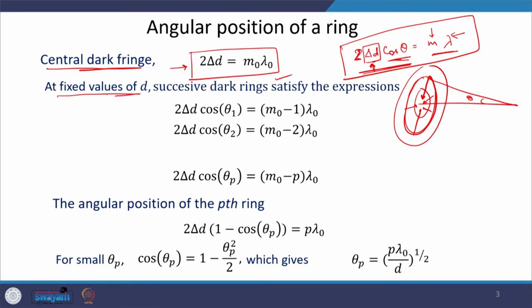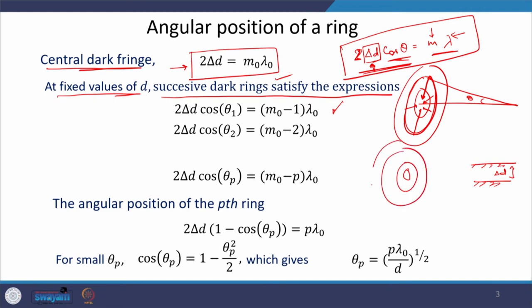Now suppose the separation between the two mirrors is fixed. For fixed δd, the successive dark rings satisfy a specific expression. We have fixed the separation between the two mirrors, and due to this separation a ring fringe pattern forms. We can assign angular positions to the different rings. If we vary θ and focus our attention on different rings, successive dark rings starting from the centre satisfy these criteria.